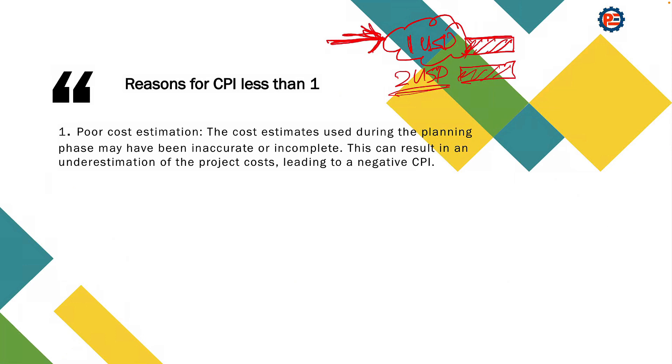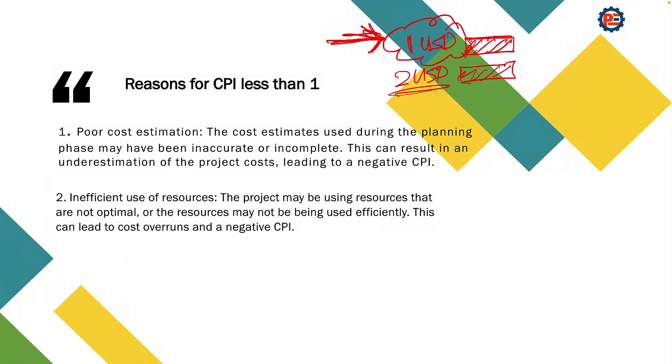The second reason: inefficient use of resources. The project may be using resources that are not optimal or the resources may not be used efficiently. This can lead to cost overrun and a negative CPI.